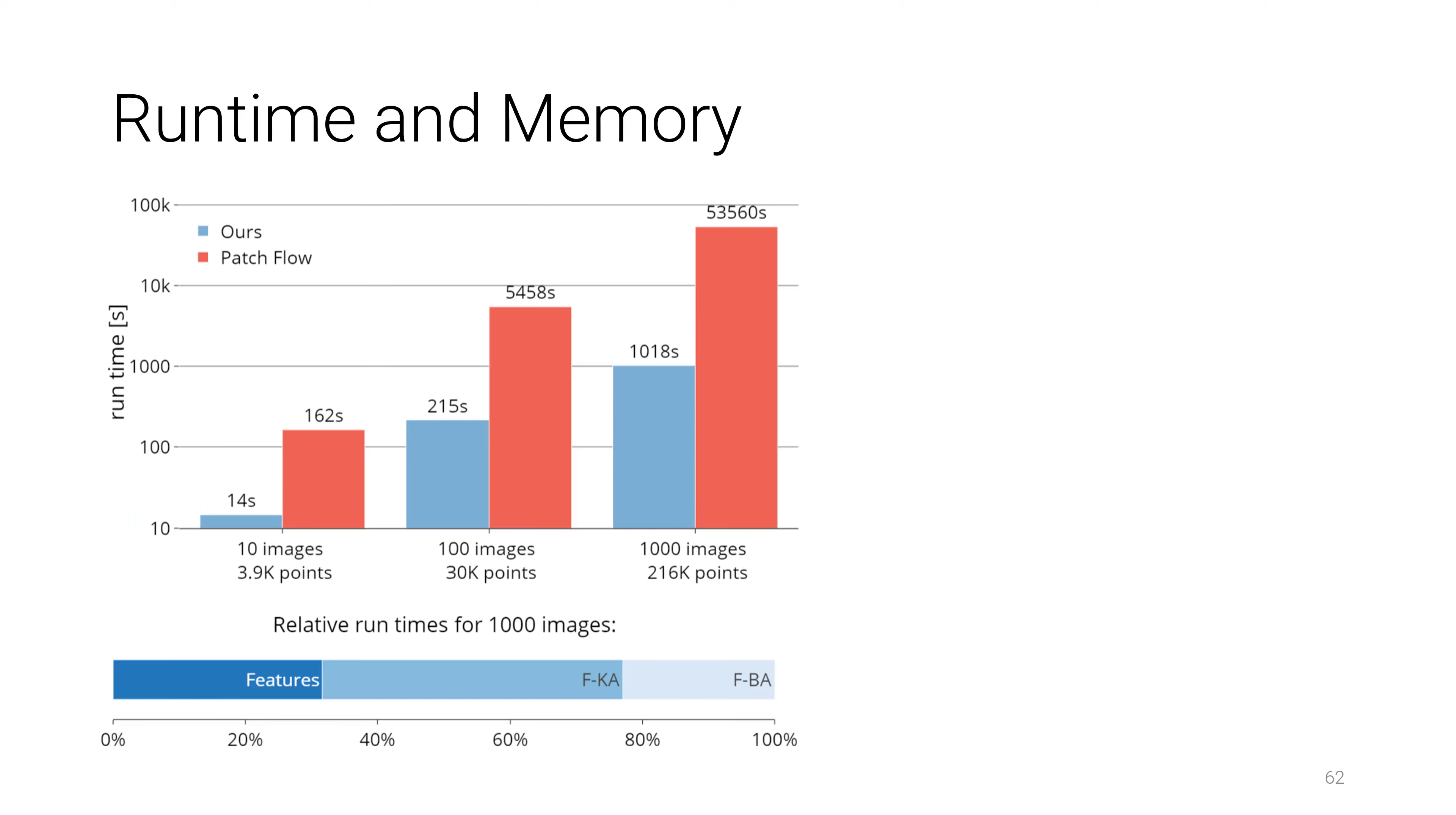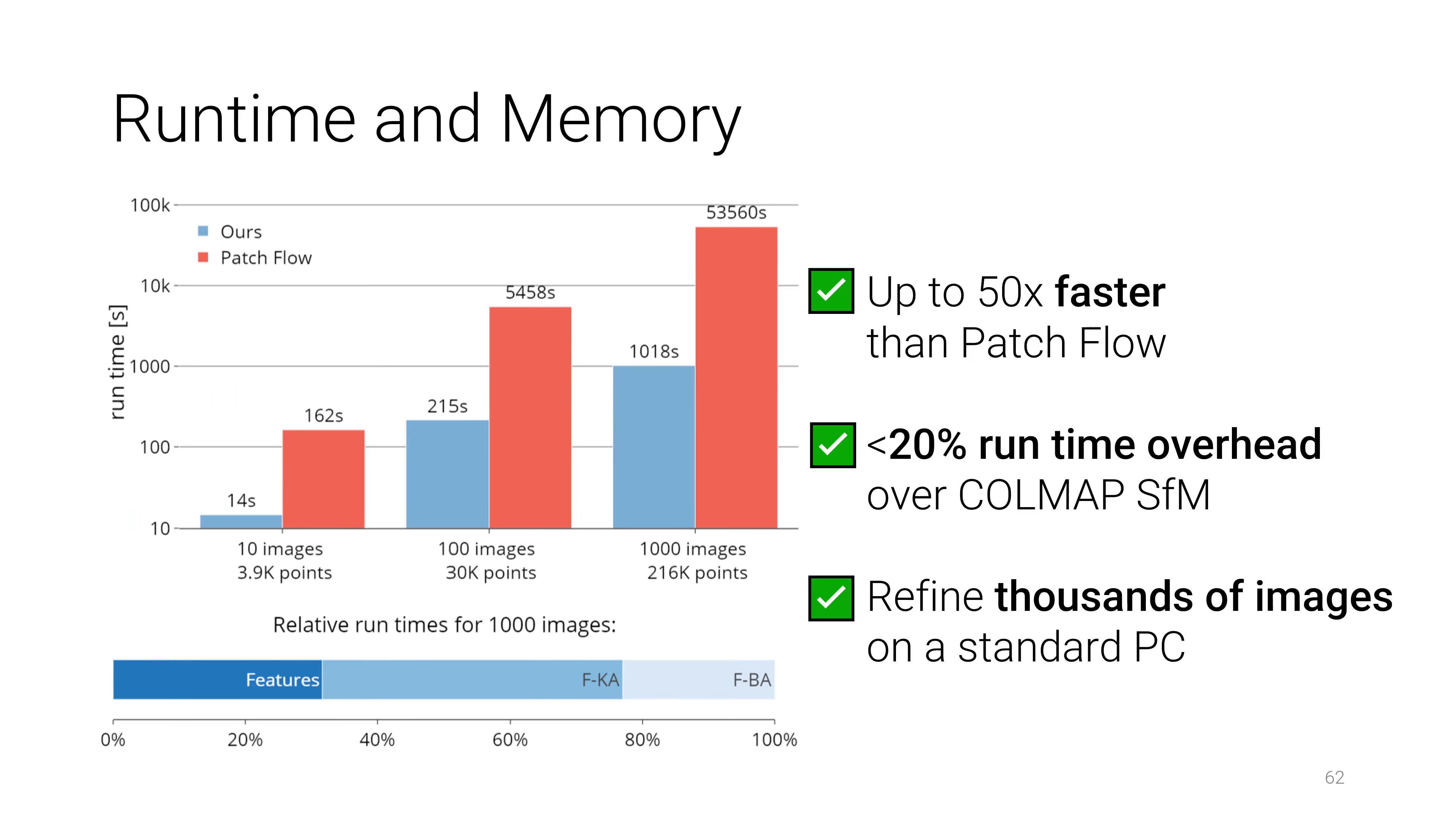Compared to its main competitor patch flow, Pixel Perfect Structure from Motion is an order of magnitude faster, with less than 20% overhead to the classic SFM pipeline. With some local approximations, it is able to scale to thousands of images even on a normal PC.